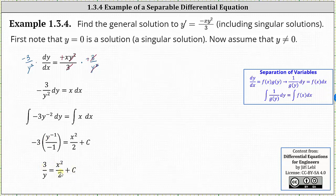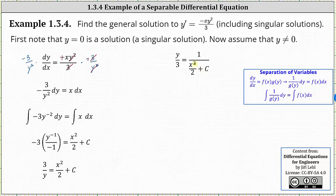Now we need to solve the equation for y. If three divided by y is equal to x squared divided by two plus c, we can take the reciprocal of both sides of the equation, which gives us y divided by three equals one over the sum of x squared divided by two and c. Next, let's multiply both sides of the equation by three. We now have y equals three divided by the quantity x squared divided by two plus c.